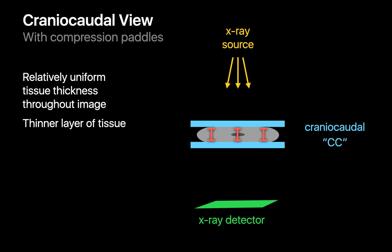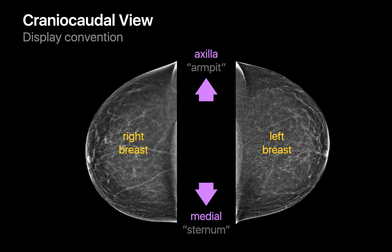If we compress each breast into a slab of relatively uniform thickness and x-ray them, we get a pair of cranial caudal mammograms. When we display cranial caudal, or CC, mammograms of both breasts, the convention is: the mammograms are displayed so that the lateral armpit side of both breasts are at the top of our display, the sternal side of both breasts are at the bottom, and the nipples point away from each other.